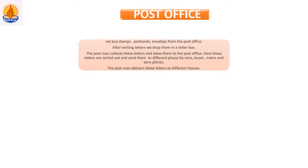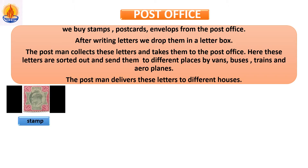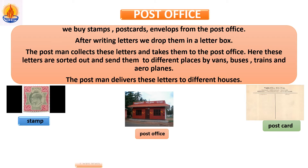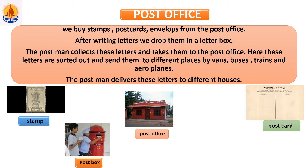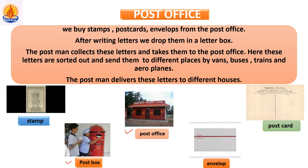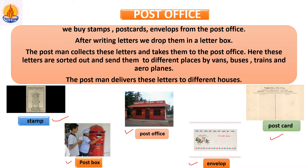Post office. Every place has a small post office. There we buy stamps, postcards, and envelopes. After writing letters, we drop them in a letter box. The postman collects these letters and takes them to the post office. Here the letters are sorted out and sent to different places by vans, buses, trains, and aeroplanes. The postman delivers these letters to different houses. See — this is a post box, this is a post office, these are stamps, these are envelopes, and this is a postcard.